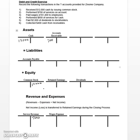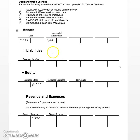Revenue accounts typically increase on the credit right side. You may wonder why we didn't credit retained earnings like in earlier chapters. The calculation of revenues minus expenses equals net income, and that net income is then transferred to retained earnings during the closing process at the end of the accounting period. There's no need to reflect that now. We're just recording the original entry to service revenue, and once the closing process takes place, an increase in revenue increases net income, which increases retained earnings, keeping our accounting equation in balance.